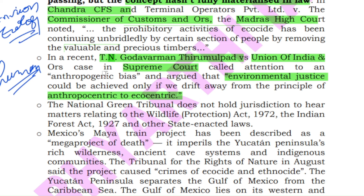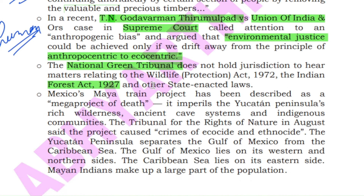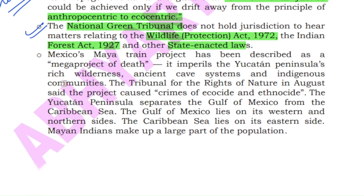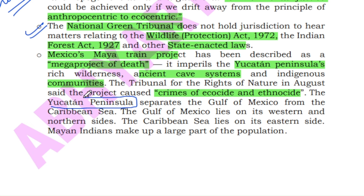The National Green Tribunal, Wildlife Protection Act, Indian Forest Act and other state-enacted laws have no jurisdiction and cannot provide orders regarding crimes under the Wildlife Protection Act or Forest Act of 1927. Mexico's Maya Train project was in news because it runs through the Yucatan Peninsula in Mexico, potentially disrupting the ancient cave system there and affecting indigenous Mayan communities — the ethnic population of the Yucatan Peninsula.